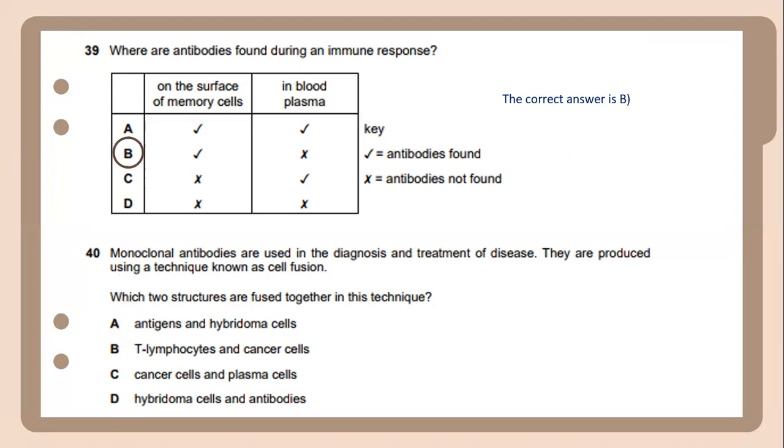Monoclonal antibodies are used in the diagnosis and treatment of disease. They are produced using a technique known as cell fusion. Which two structures are fused together in this technique? The answer is cancer cells and plasma cells.